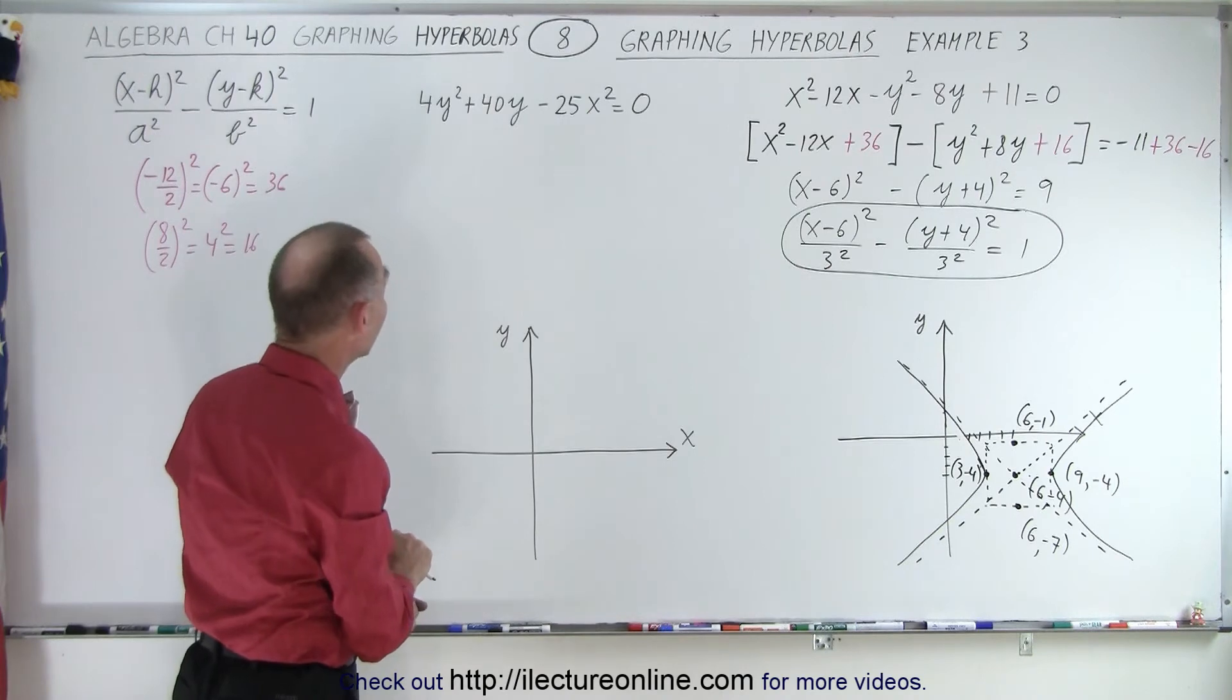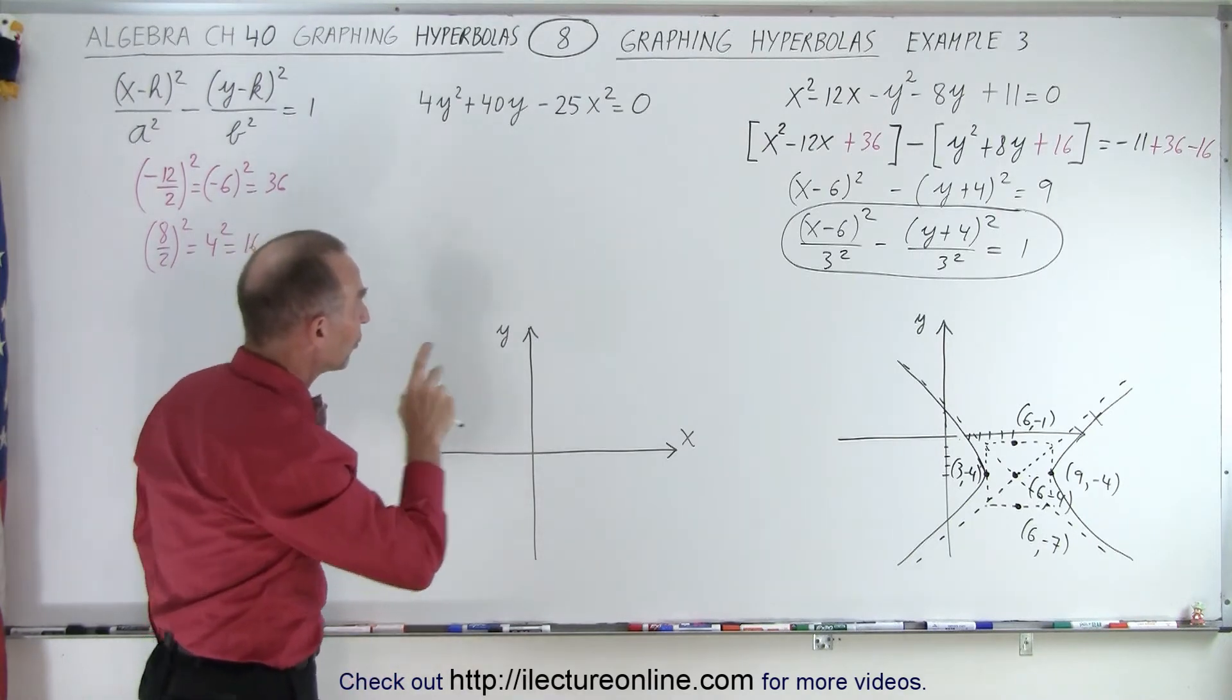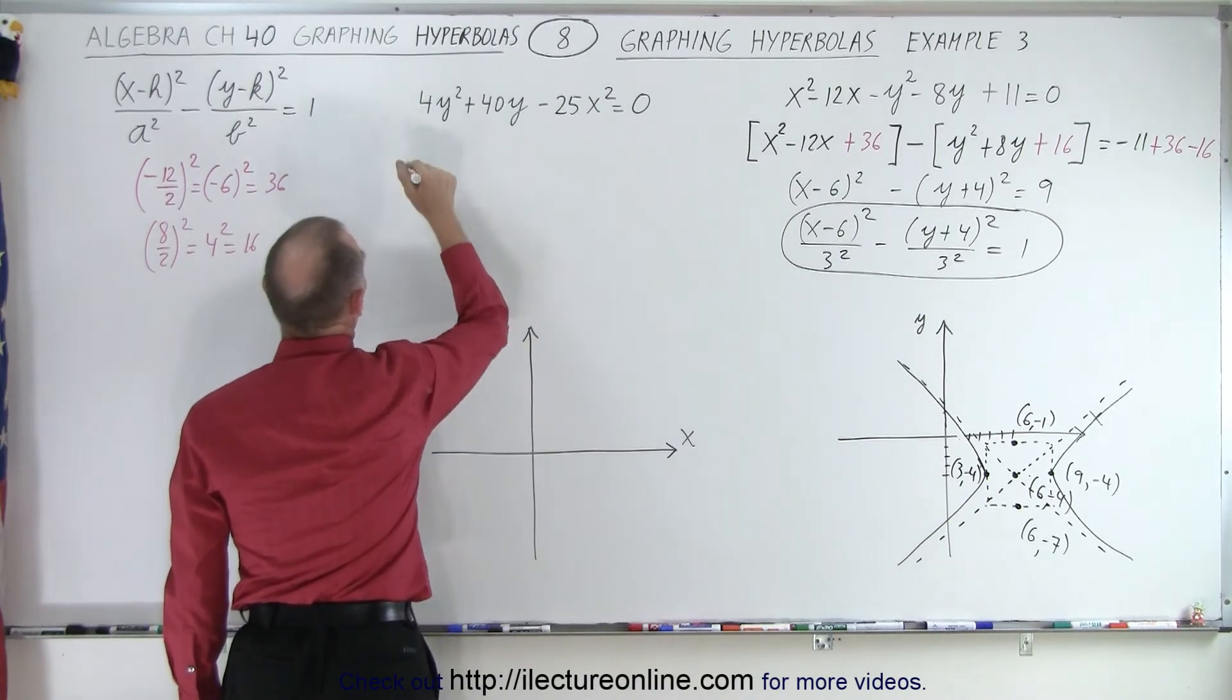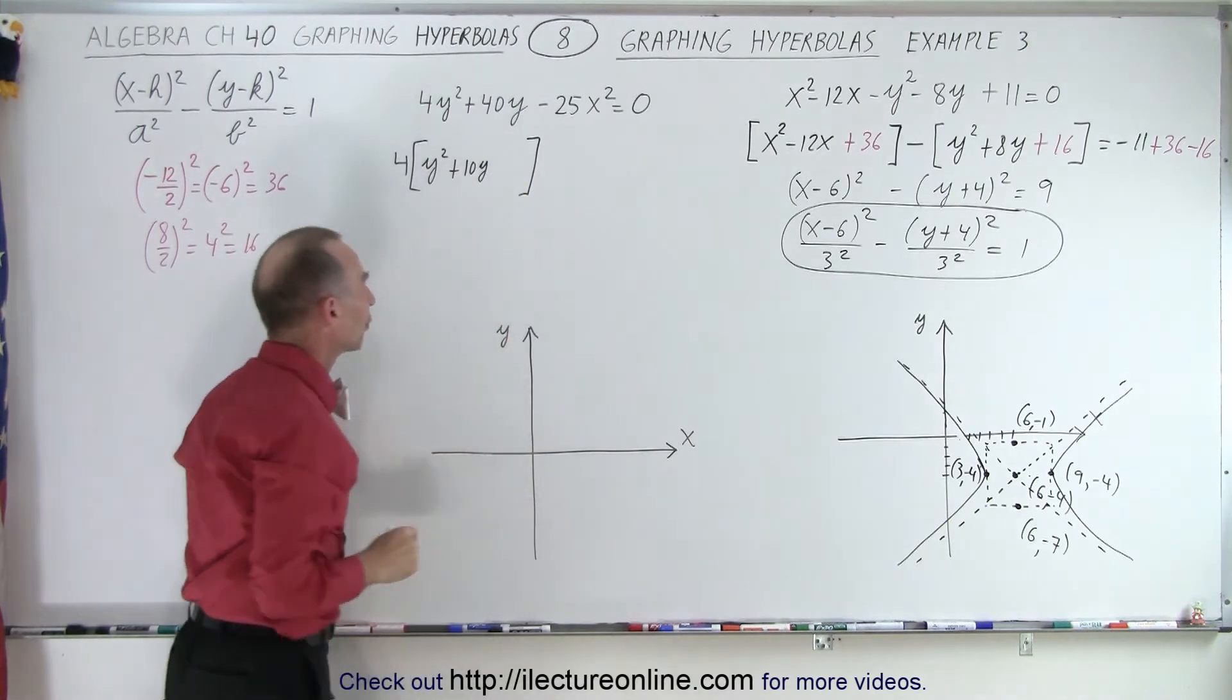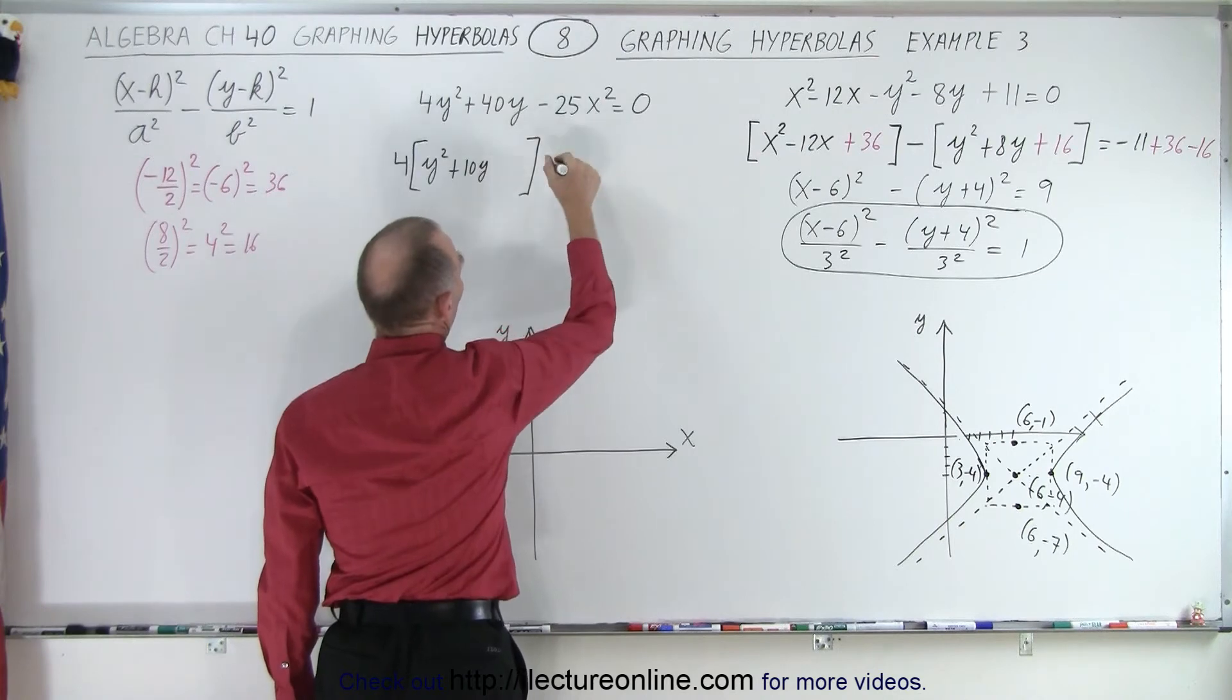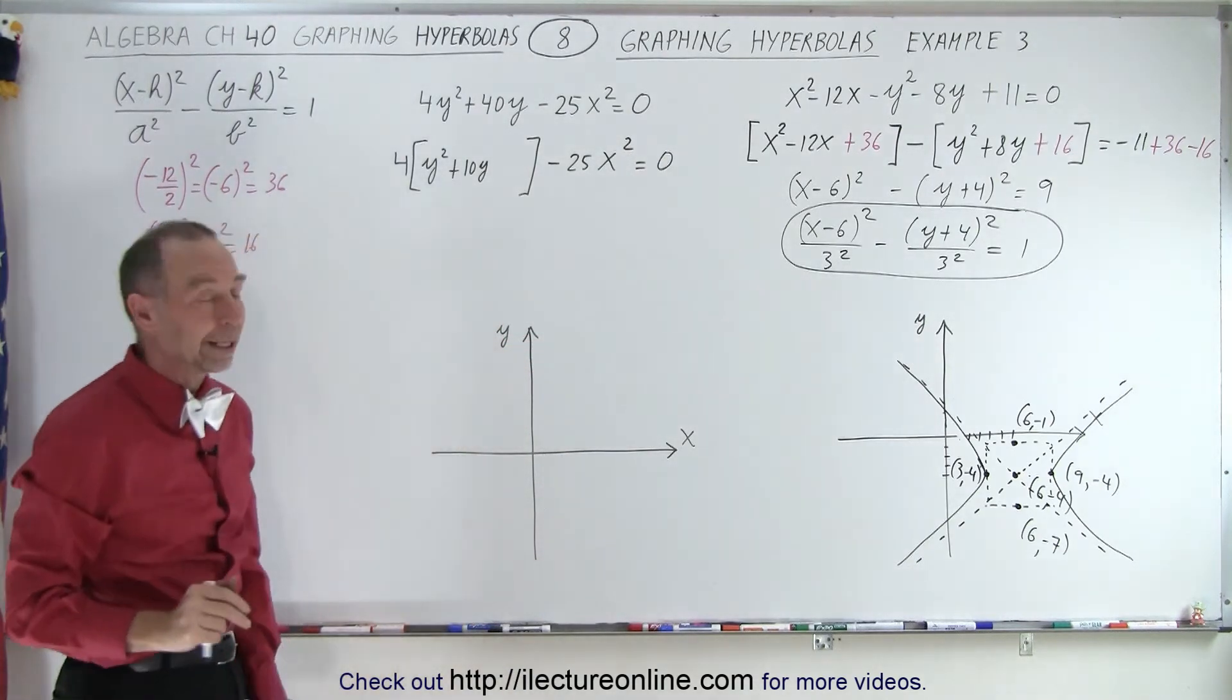Now, we need to do the same over here, but notice in front of the y squared term, there's a number 4. That complicates things a little bit. So what we're going to do is do the same thing as we did over there, except we're going to factor out that 4. So we write 4 times y squared plus, instead of 40y, we write plus 10y. And then we'll leave some space for that third term. Notice we don't have an x to the first power term, so this becomes minus 25 times x squared is equal to 0. So we only have to worry about this portion right here.